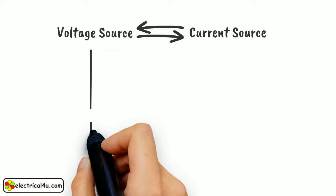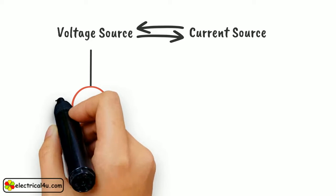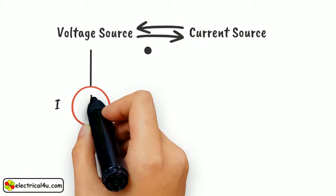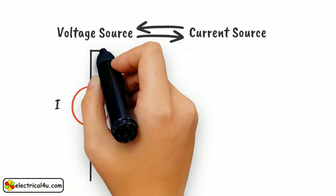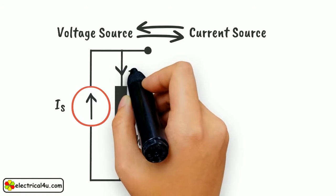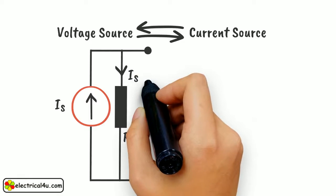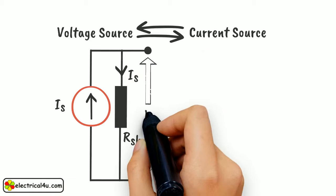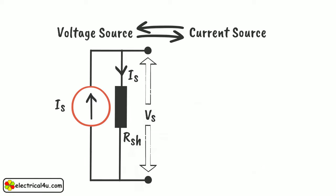Now consider a current source which gives the same current Is at short circuit condition. If this short circuit current flows through the resistance parallelly connected with the ideal current source, it will give the same voltage drop Vs.